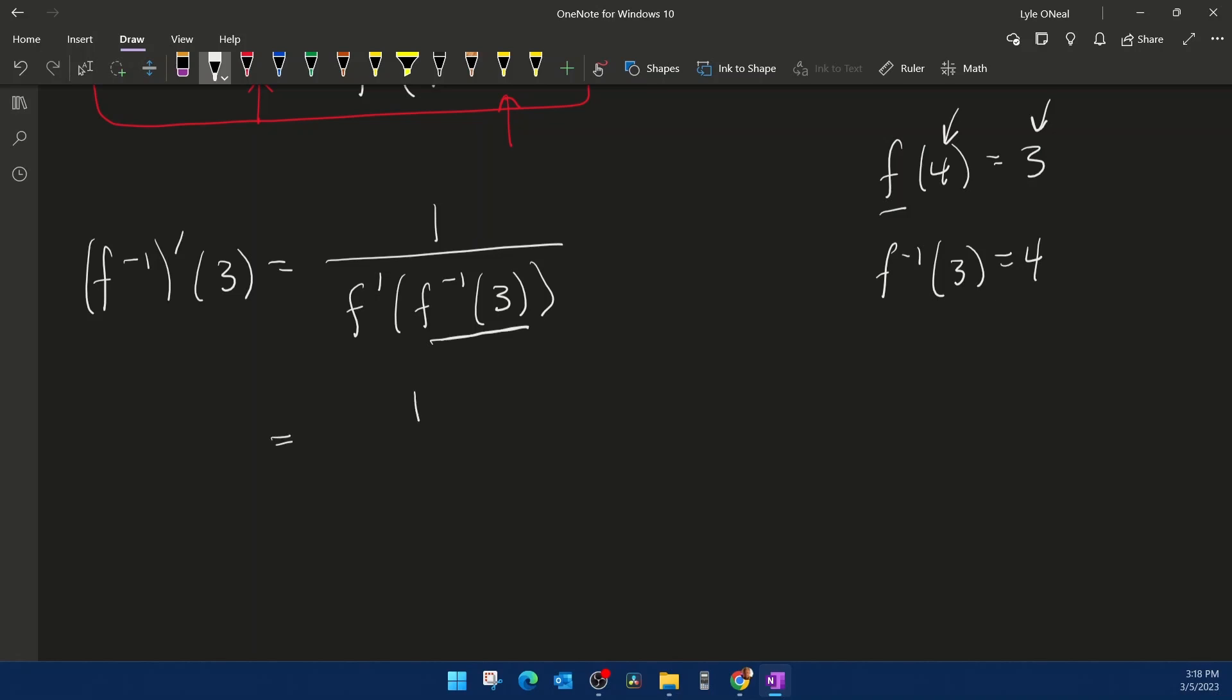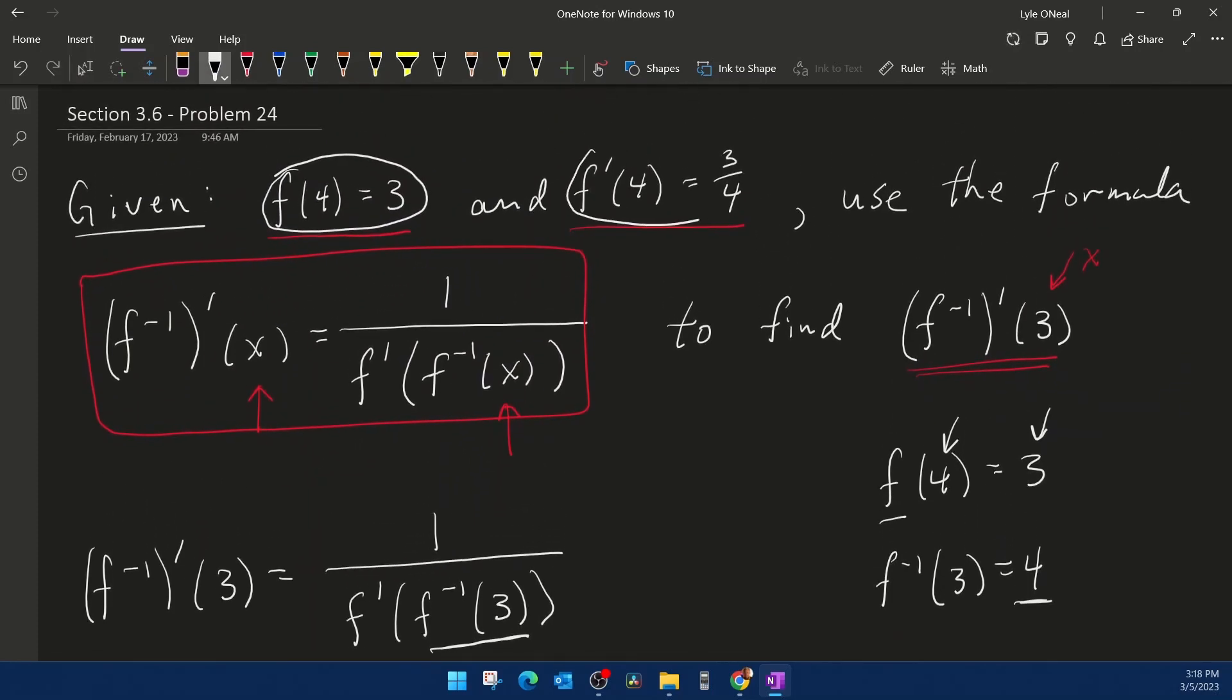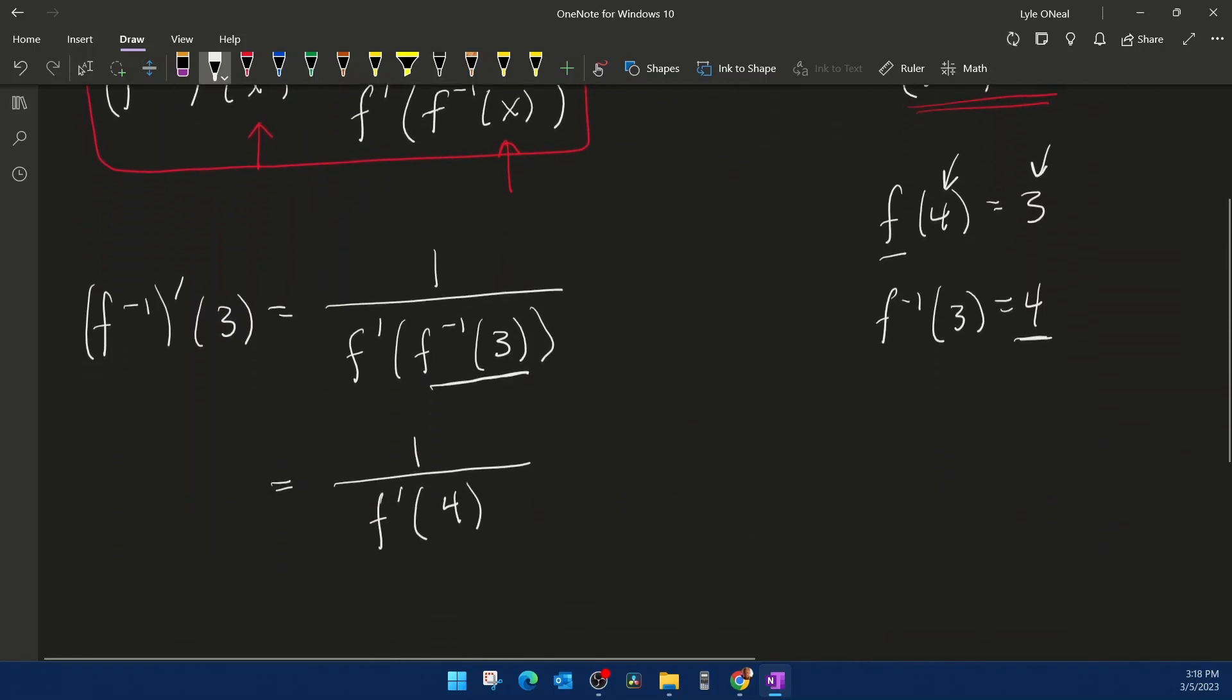That's going to be 1 over the derivative of f evaluated at 4. And then coming back up, we know what that is. F prime of 4 is 3 fourths.